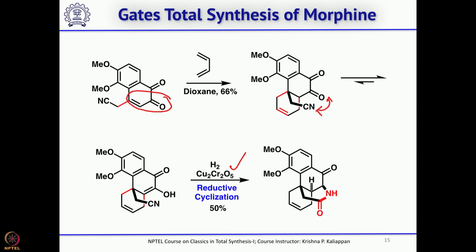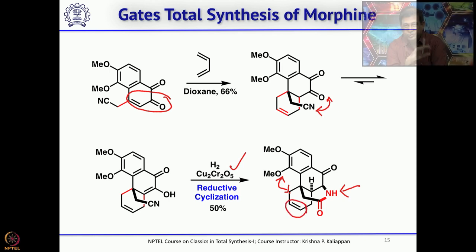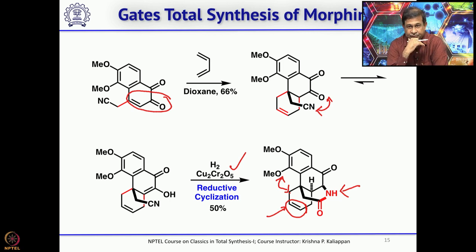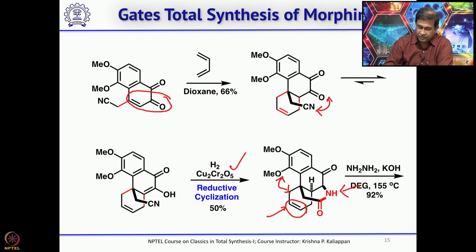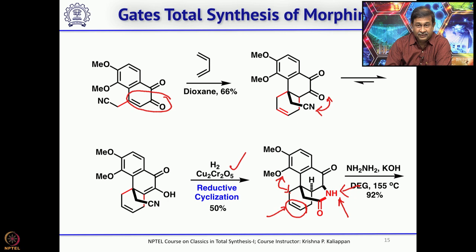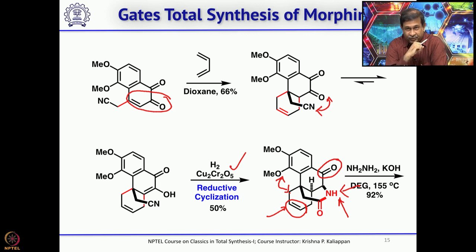At this stage four rings had been introduced: one aromatic and three 6-membered rings. To complete the total synthesis, the nitrogen needed to be N-methylated, an oxygen bond needed to form, the double bond had to be isomerized, and an oxygen had to be introduced at a specific carbon. The carbonyl group not present in morphine was first removed using a modified Wolff–Kishner reduction.